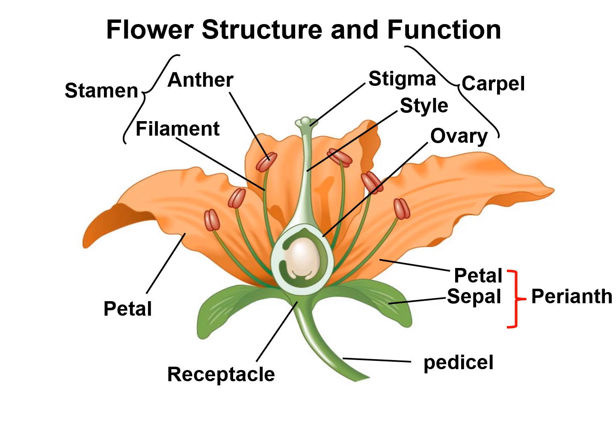First, we discuss about the stamen. Stamen is the male reproductive structure of the flower. It consists of a stalk called the filament that ends on the anther. The anther contains pollen sacs in which meiosis occurs and pollen grains form.